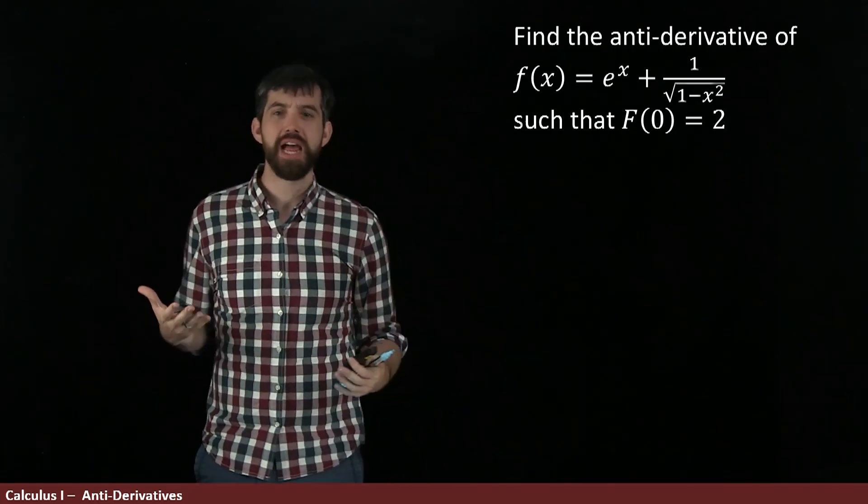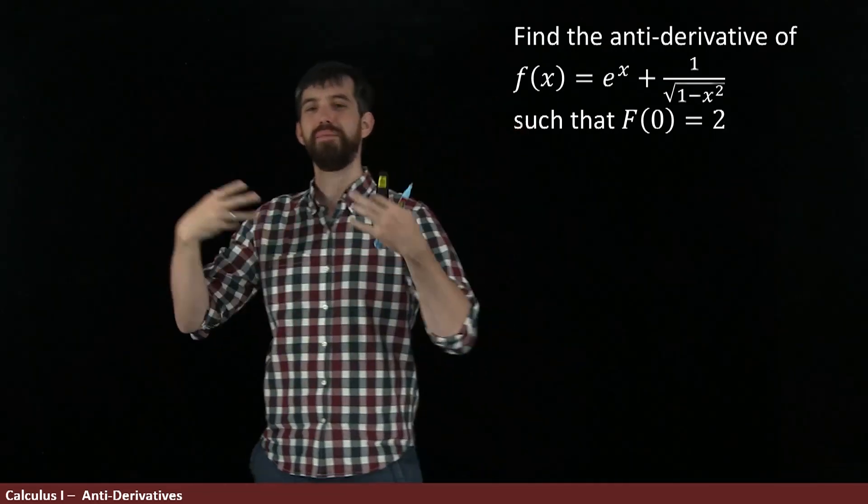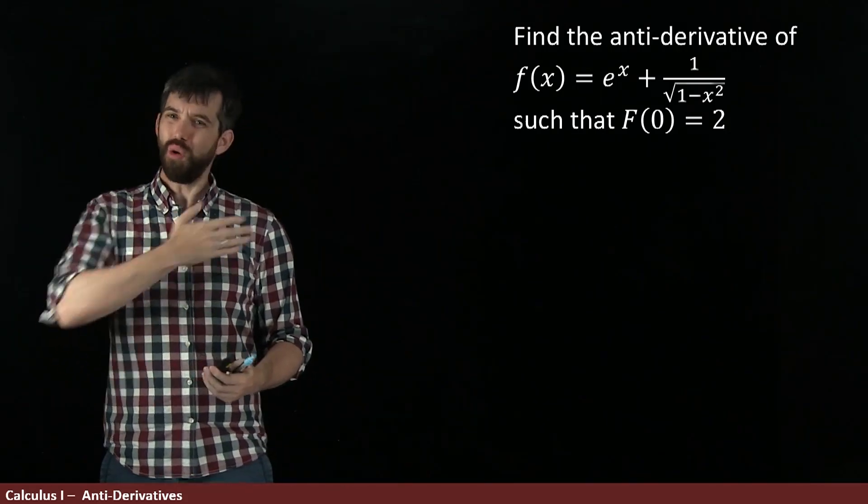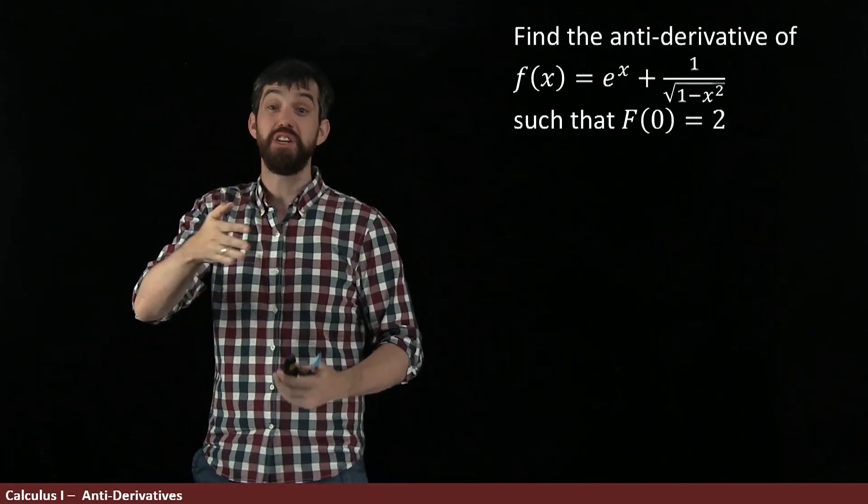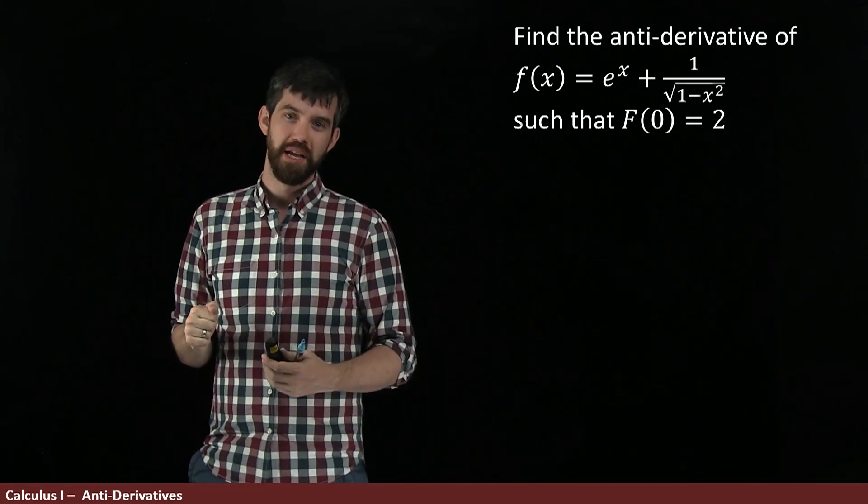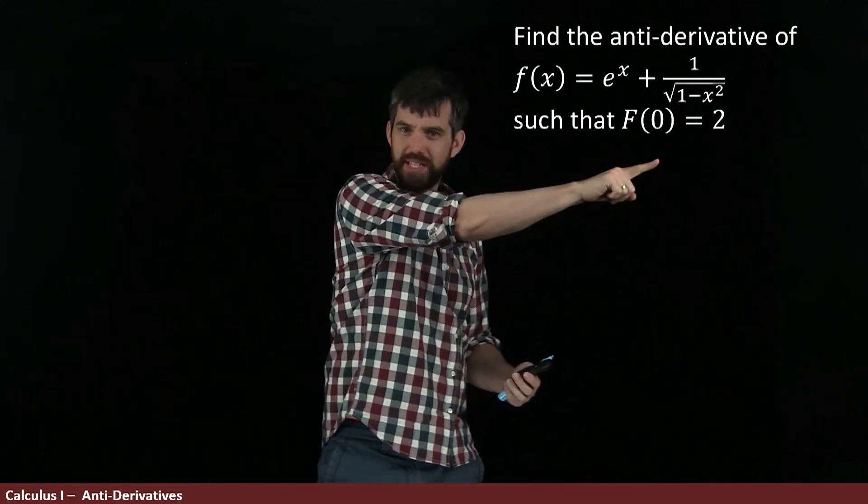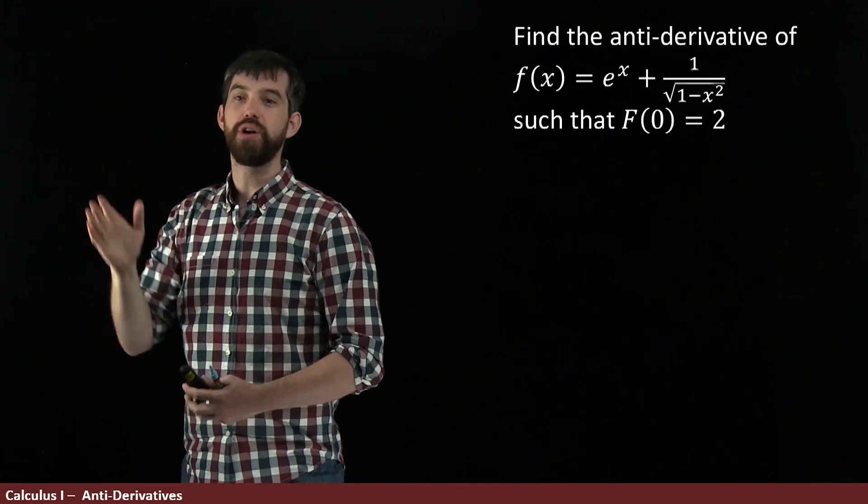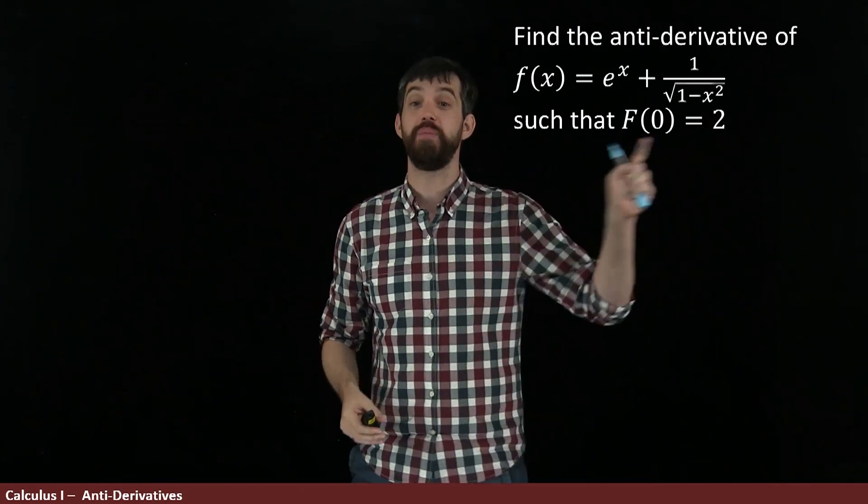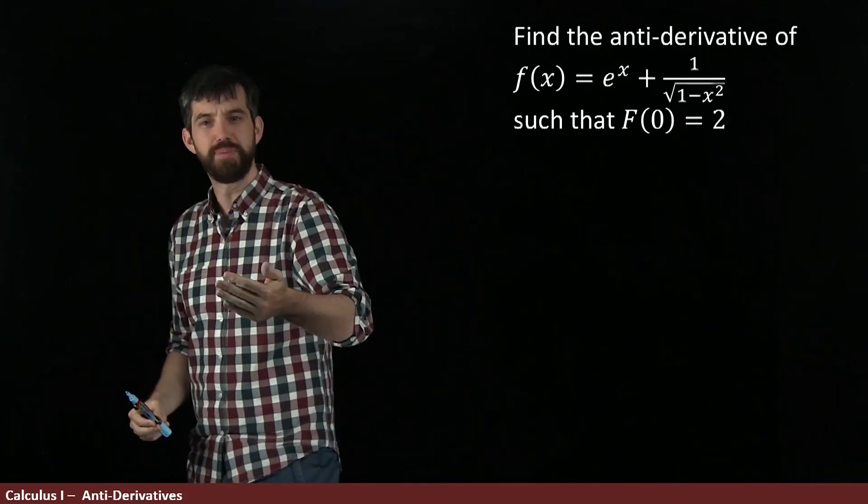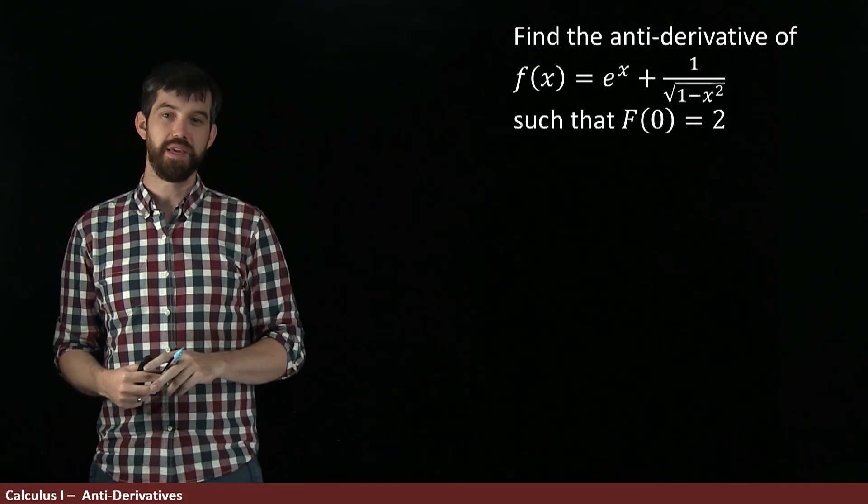If we think about the general antiderivative of this little f, it's going to be some function F plus an arbitrary constant. So there's a whole infinite family of different antiderivatives depending on what the value of the constant is. But by plugging in this number, for one of the values of C, when you plug in 0, it's going to be equal to 2. In other words, this claim that F(0) equals 2 is basically going to tell us what that C value has to be.